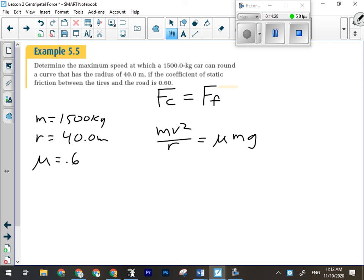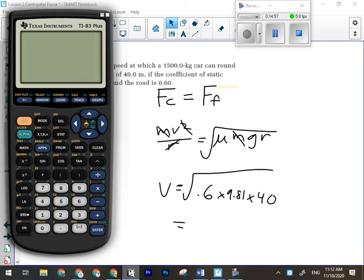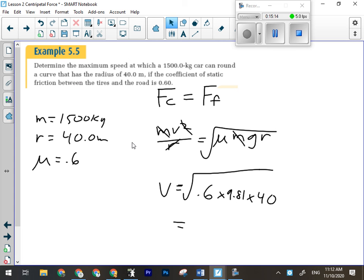So I'm trying to find the speed at which we can take it. So what do I have to do with R? Multiply it over to this side. And then M is going to cancel, and then I'm going to have to square root. It's the square root of μgr. So we've got V equals the square root of 0.6 times 9.81 times 40 meters. So the fastest we can take this corner is, actually we only have two significant figures here, so 15 meters per second.